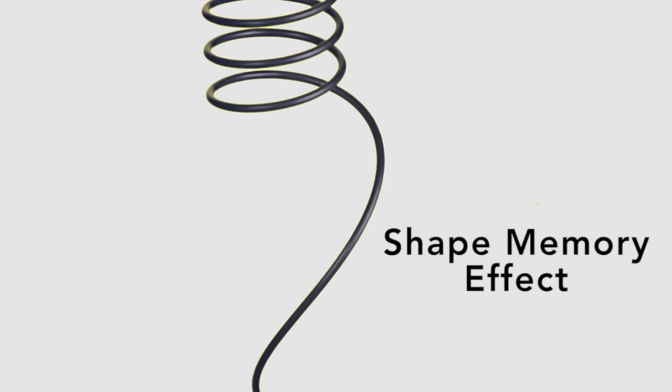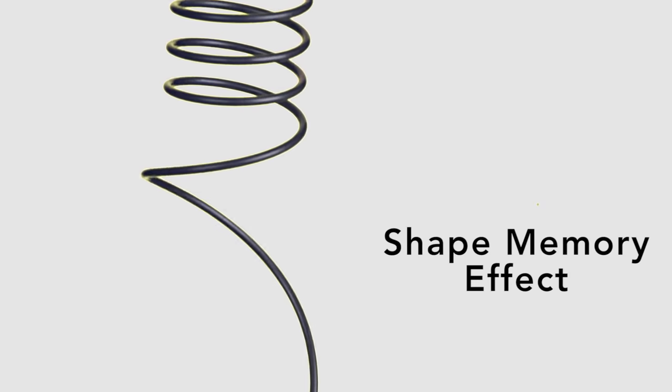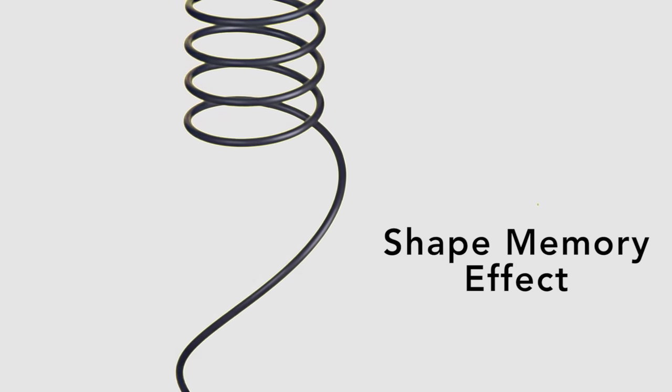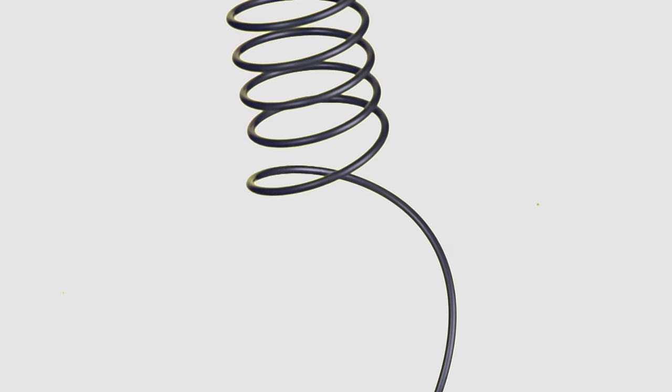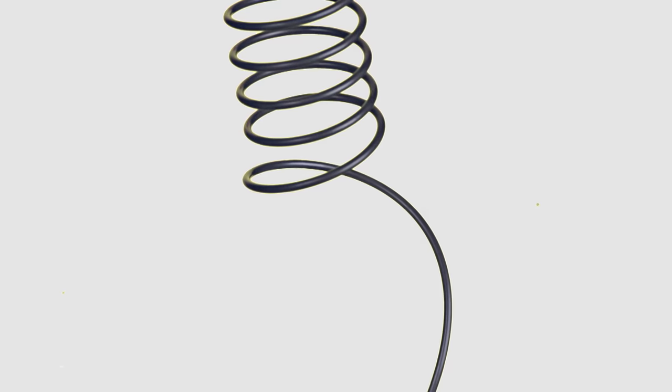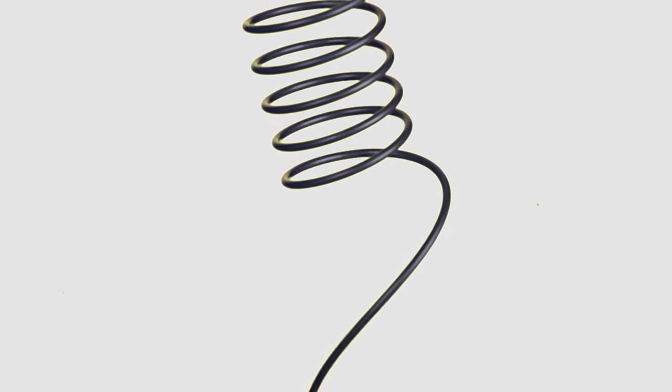A length of this wire was formed at very high temperatures into a spring. This shape-setting occurs at temperatures above about 500 degrees Celsius and then cooled. Almost no matter how it's bent at room temperature, it returns to its original shape when heated at 75 degrees Celsius or so.